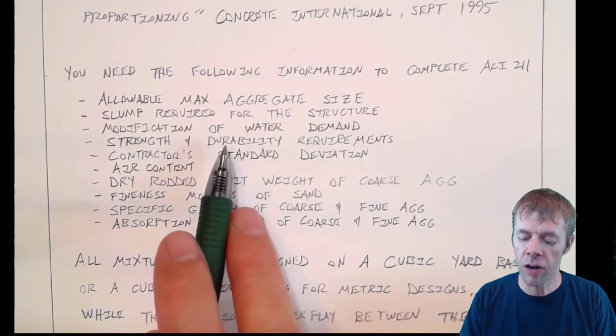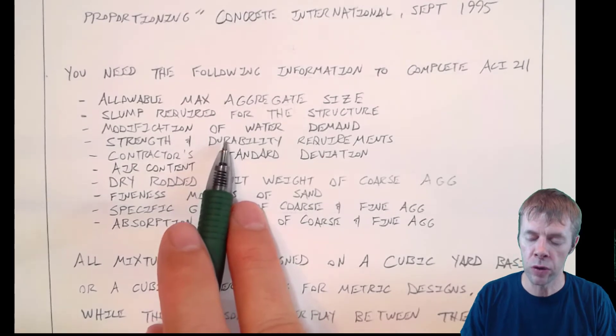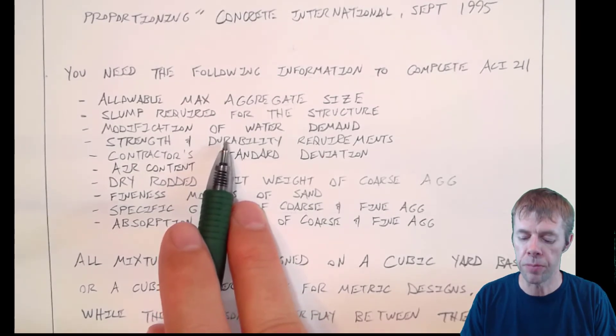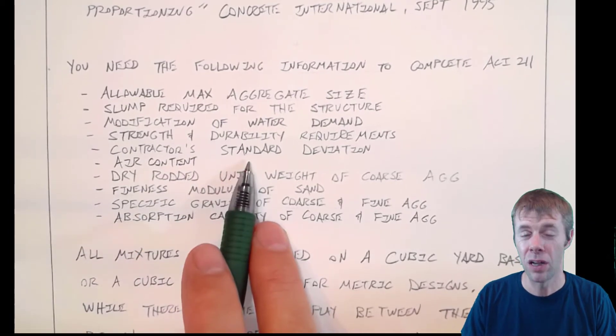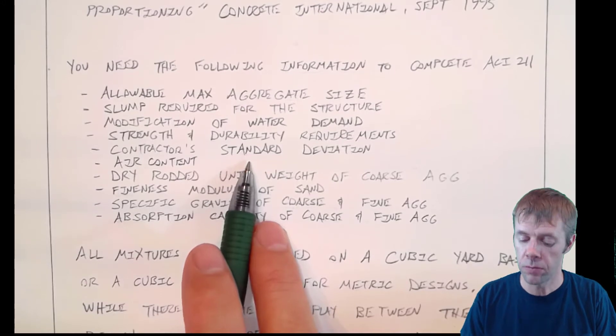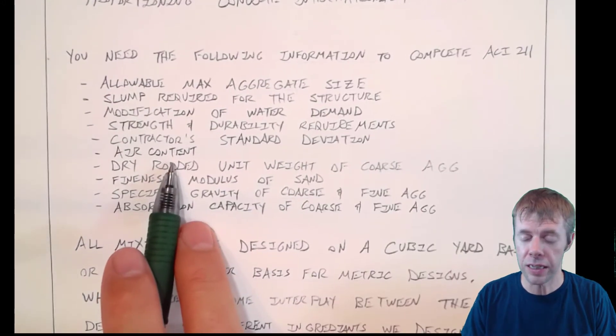Then, you might have to modify the water demand and you have to know what that number needs to be. You're going to have to know the strength and durability requirements for your mixture. You have to know the standard deviation for producing that mixture. You have to know the air content needed,